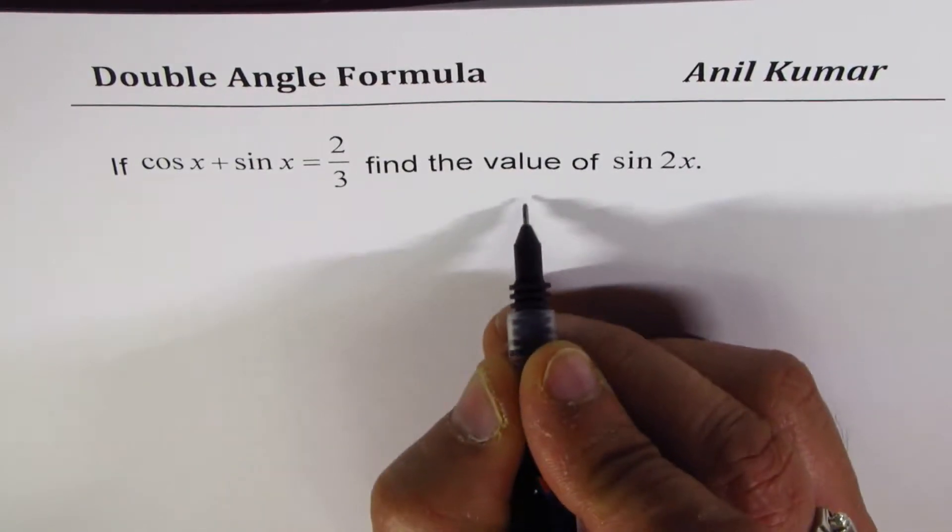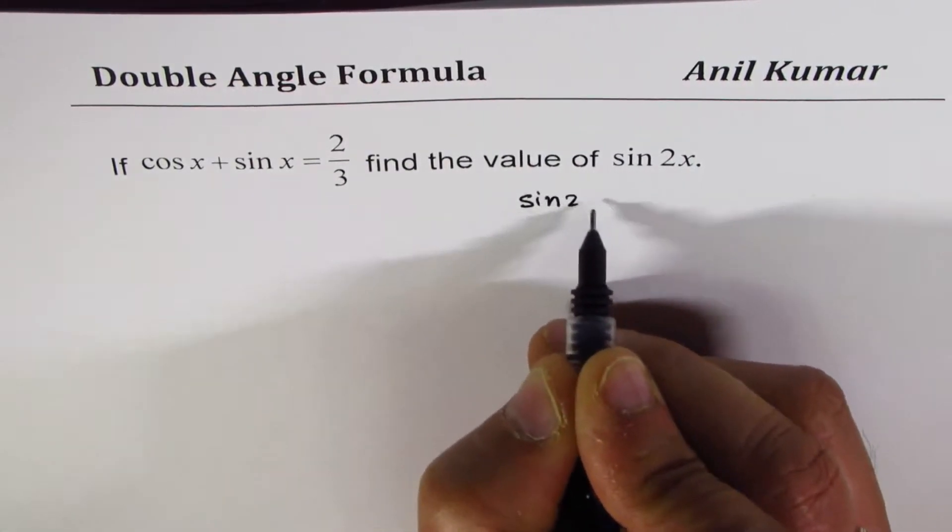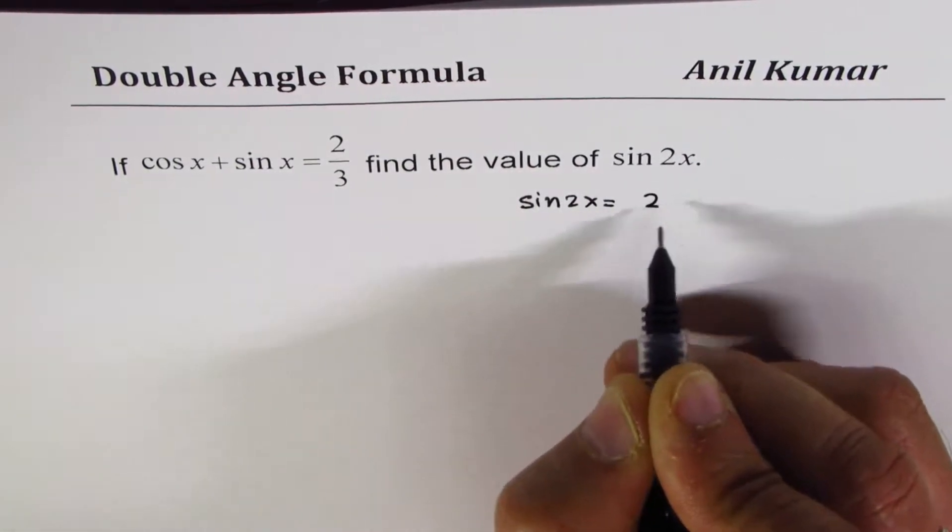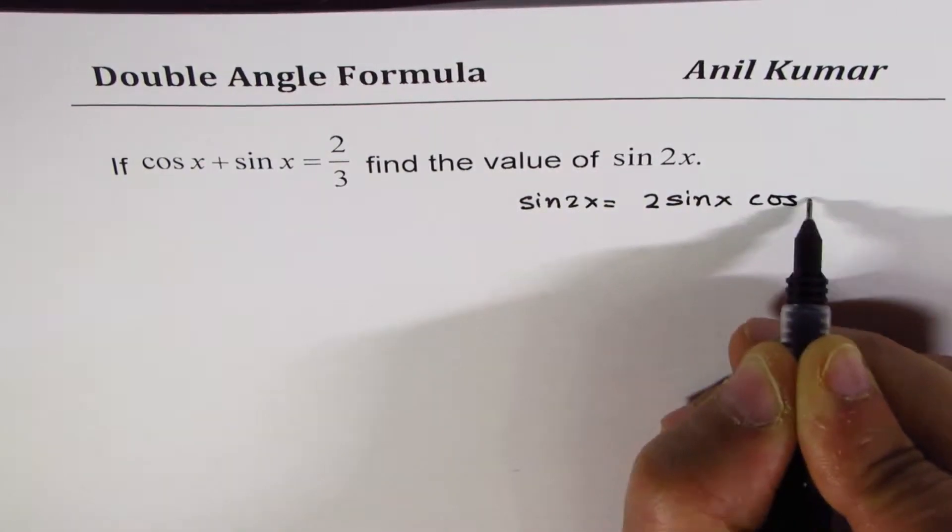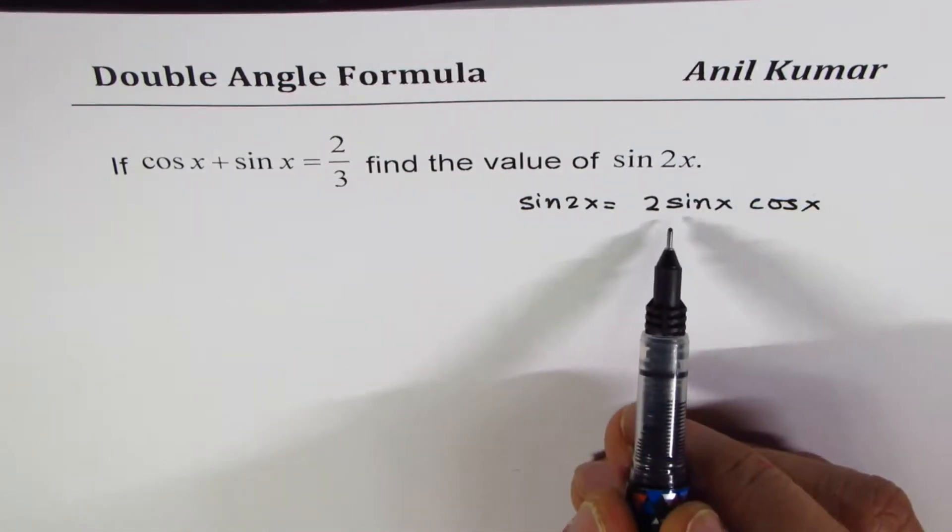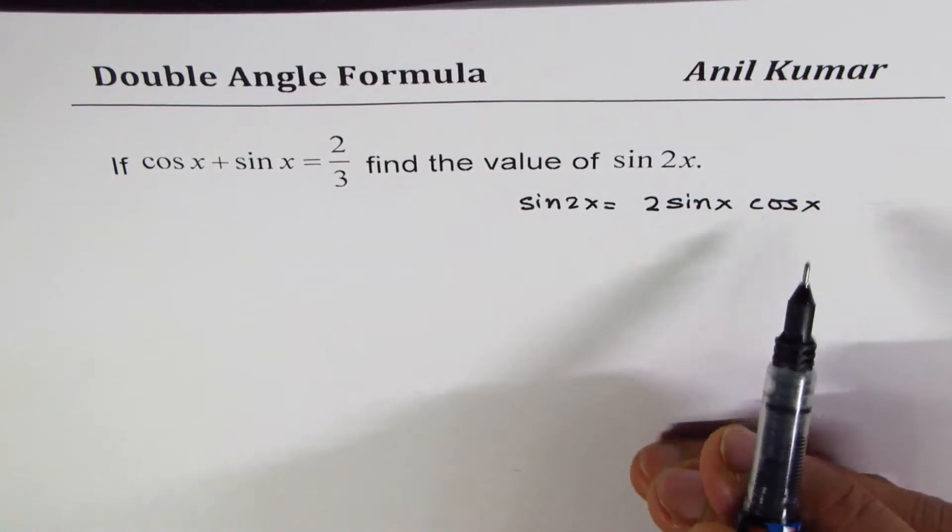Let's recall the formula for sin 2x. Sin 2x equals 2 sin x cos x. So to find the value of sin 2x, we should know what is 2 sin x cos x, correct?